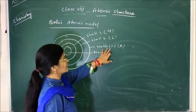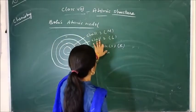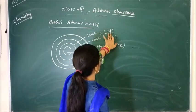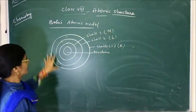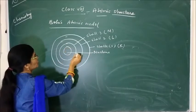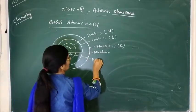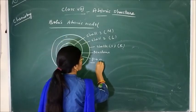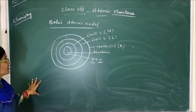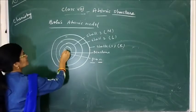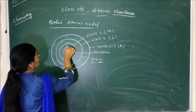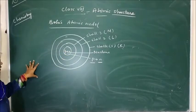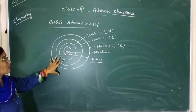Shell 1 was given the name K, Shell 2 was named L, Shell 3 was named M. Inside the center part, which he called the nucleus, protons and neutrons are present — protons which are positively charged and neutrons which have no charge. The mass of the atom is concentrated in the nucleus, a theory also given by Rutherford and accepted by Bohr.